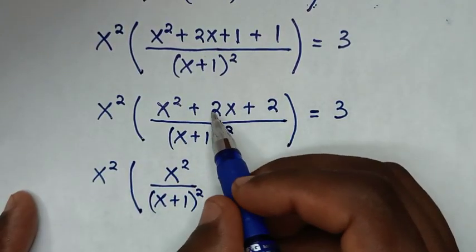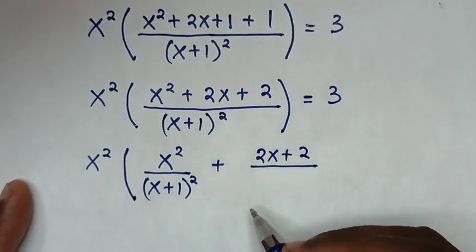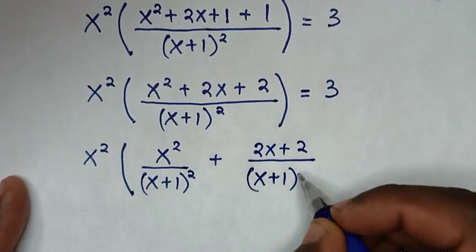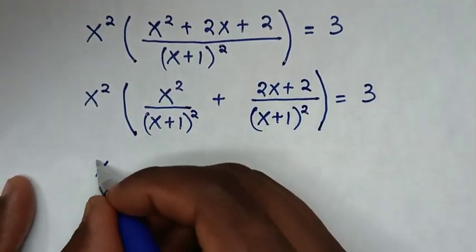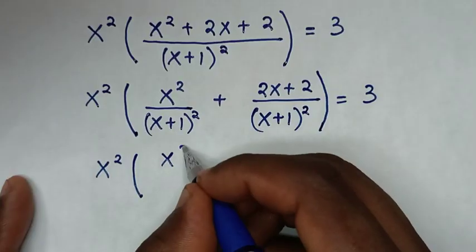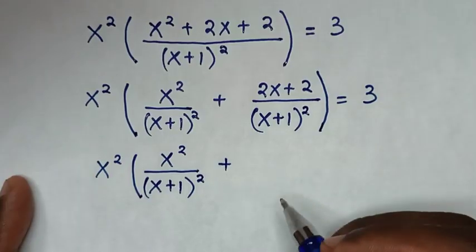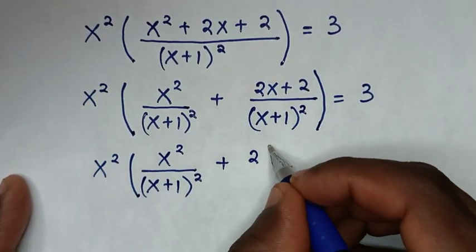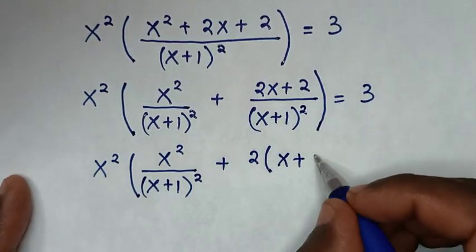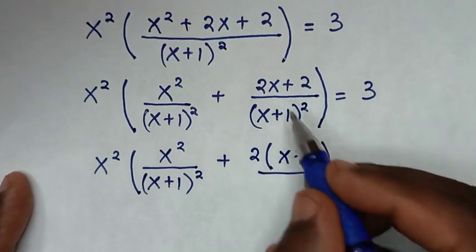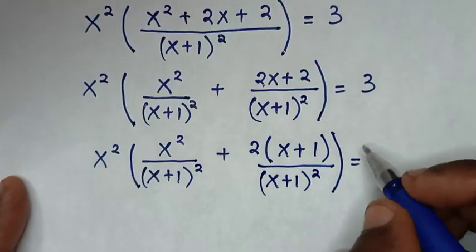...plus we are left with 2x+2, so it will be 2x+2 over the denominator (x+1)², bracket equals 3. Then in the next step it will be x² times the bracket, then x²/(x+1)², then plus. In here, 2 is common so we take 2 out of the bracket; this divided by this is (x+1), over the denominator (x+1)², bracket equals 3.